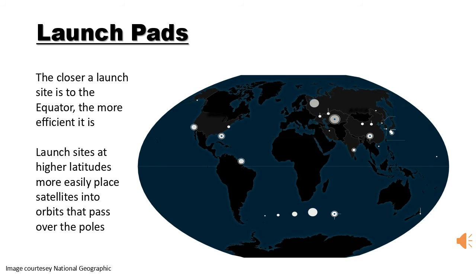Launch pads or launch sites: the closer a launch site is to the equator, the more efficient it is. Launch sites at higher altitudes more easily place satellites into orbits that pass over the poles. Major launch sites are located in the USA, India, Russia, China, and other countries.